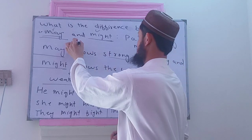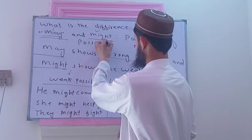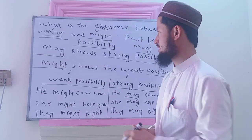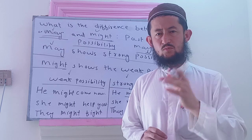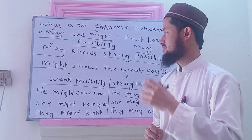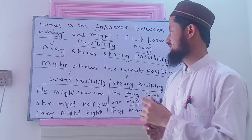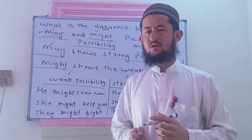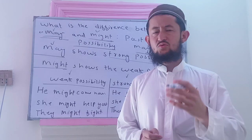Whenever we use may and might for possibility, may shows strong possibility and might shows weak possibility. May zyada possibility ko zahir karta hai — strong possibility — and might kam possibility ko zahir karta hai — weak possibility.